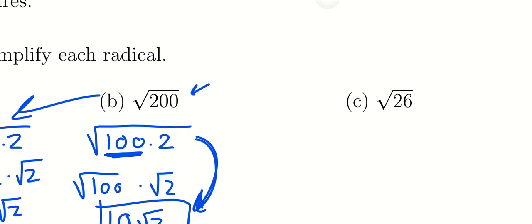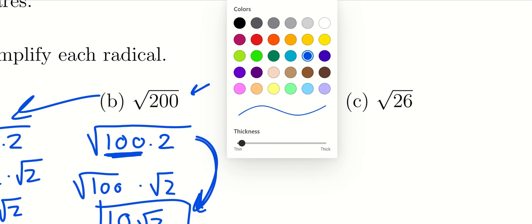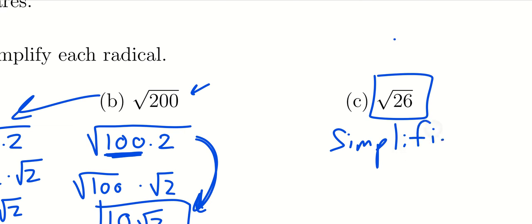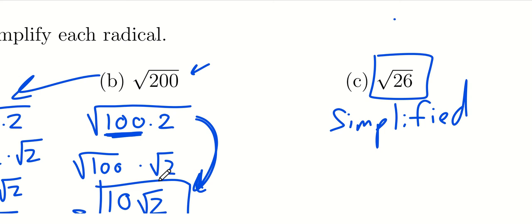For the square root of 26: 26 is not a perfect square, nor is it divisible by a perfect square. So this one is already simplified — there's nothing more we can do. The square root of 26 is already in simplest form.